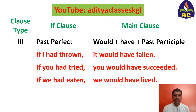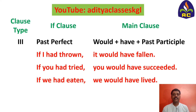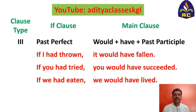So: if I had thrown, it would have fallen. If you had tried, you would have succeeded. If we had eaten, we would have lived. These are actions you hadn't taken in the past — now you are regretting at present, saying that you would have done that. So this is the third conditional.